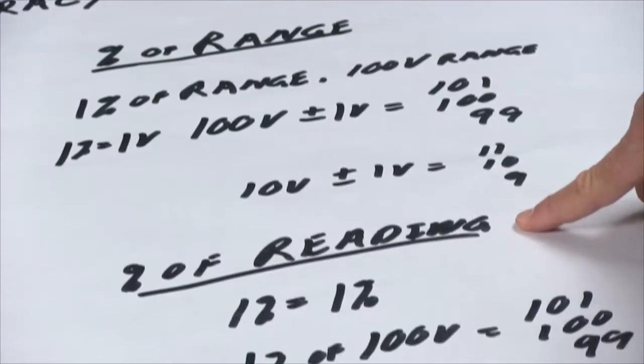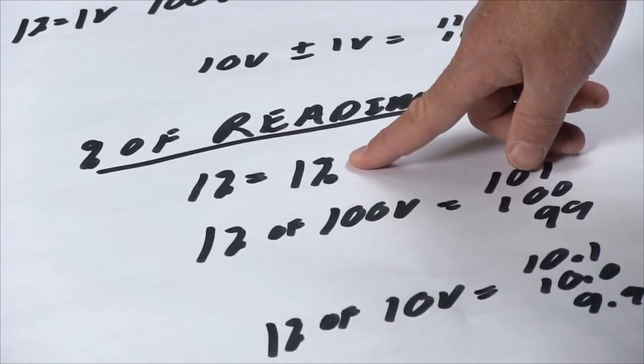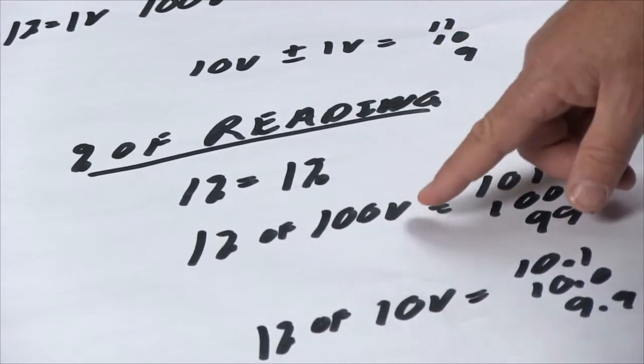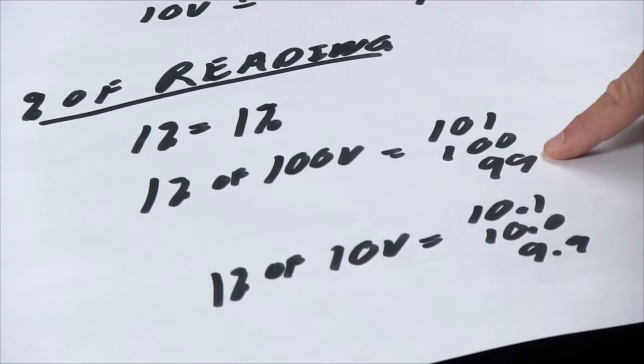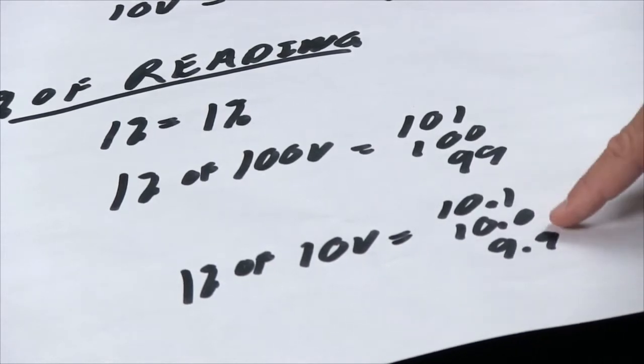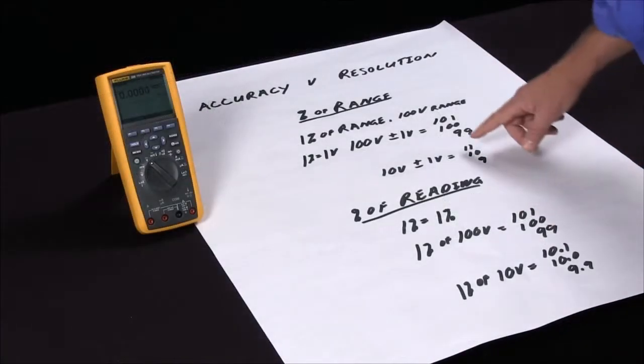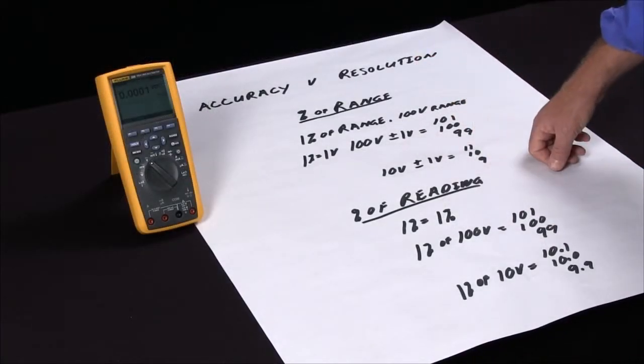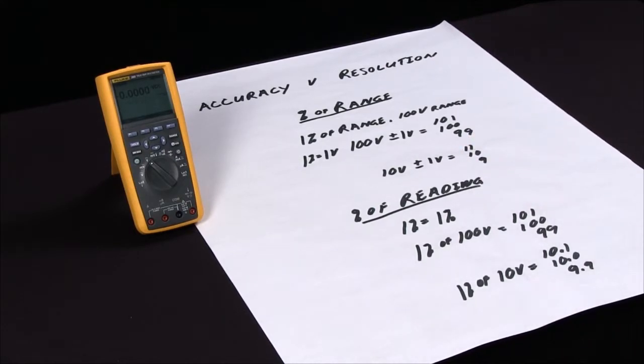A better way is to buy an instrument that has percent of reading, and then one percent is one percent. It doesn't matter what value or what range you're on. So here, one percent of a hundred volts is still that plus or minus one volt. One percent of ten volts is plus or minus a tenth of a volt. So here with percent of reading, the accuracy is a tenth of a volt. The same thing specified with percent of range, one percent is now plus or minus one volt. So it's very important if you're looking for accurate readings to make sure you select the device with a percent of reading versus a percent of range.